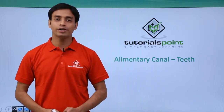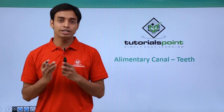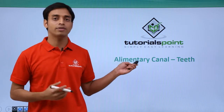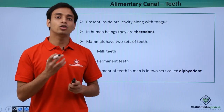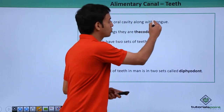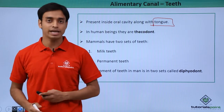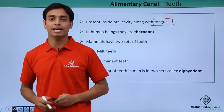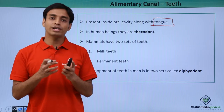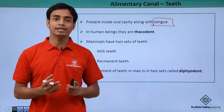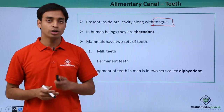Welcome to Tutorials Point. In this video we'll be talking about the alimentary canal, specifically about teeth, which are present inside the oral or mouth cavity. This is present along with a muscular structure known as the tongue. The tongue helps in mixing the food with saliva, which has digestive enzymes, and also allows us to taste different types of food. The teeth are very strongly embedded inside the socket or the jawbone present inside the oral cavity.